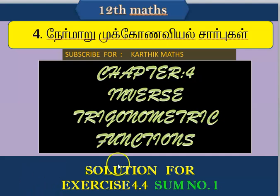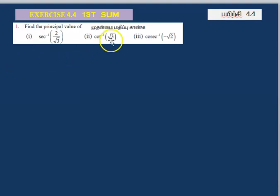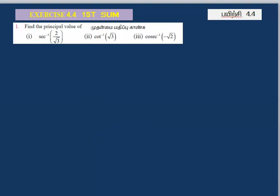For the chapter, investing numerical function exercise 4.4, first sum. First sum: principal value of a potential sum. We need to give the value of the inverse. The inverse is for the table and the domain.